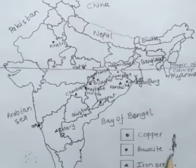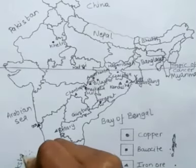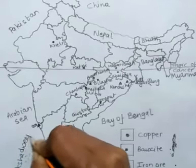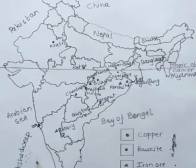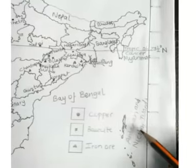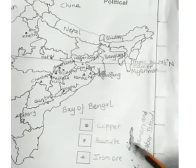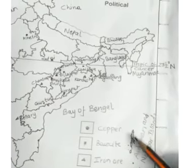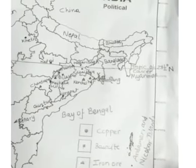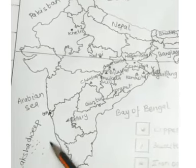These two island groups are also part of our country. This is Lakshadweep Islands, and here are the Andaman and Nicobar Islands. Both are groups of islands, not single islands — they are each surrounded by water on all sides.